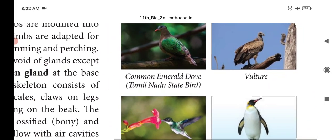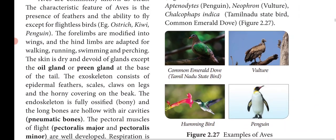Examples of Class Aves: Corvus — the scientific name of crow; Columba — pigeon; Psittacula — parrot; Pavo — peacock; Aptenodytes — penguin; Neophron — vulture; Chalcophaps indica — the common emerald dove. All of these come under the examples of Class Aves.